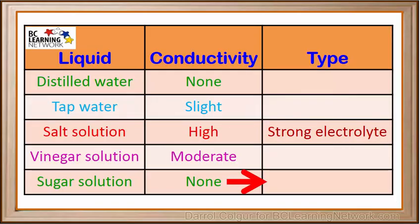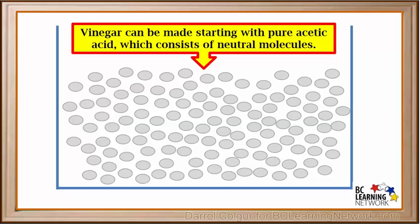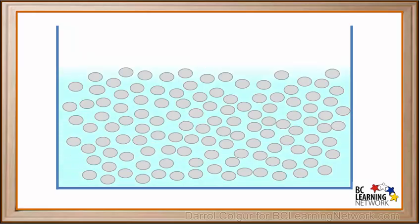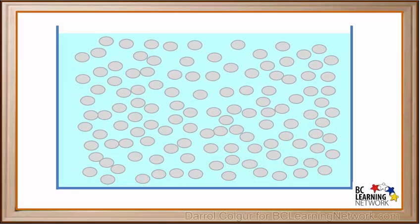Because sugar solutions have no conductivity, we call them non-electrolytes. Now we'll look at our vinegar solution. Vinegar solution is a moderate conductor. Scientists can explain this using a simple model. Vinegar can be made starting with pure acetic acid, which consists of neutral molecules. When water is added to pure acetic acid, the molecules spread out evenly to form a solution. Most of these molecules remain neutral, but a few of them break up and form ions.